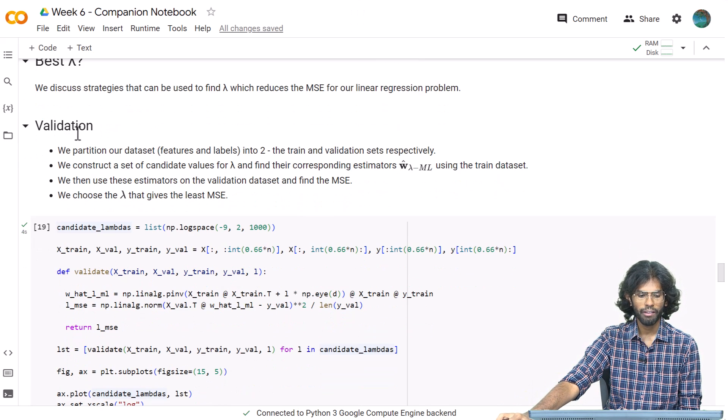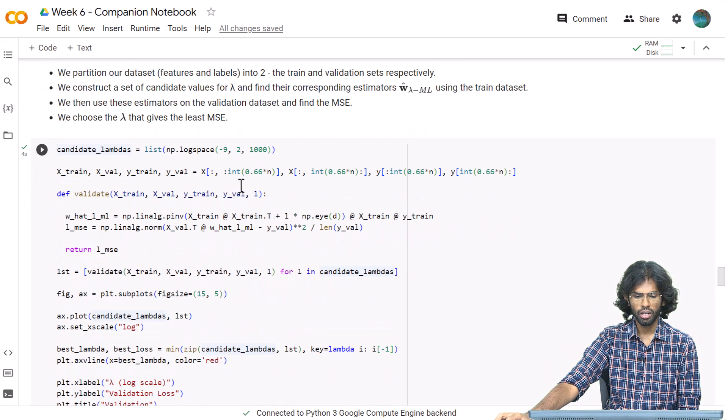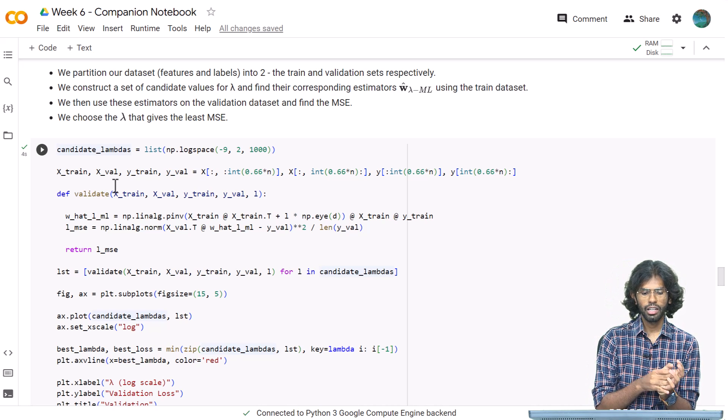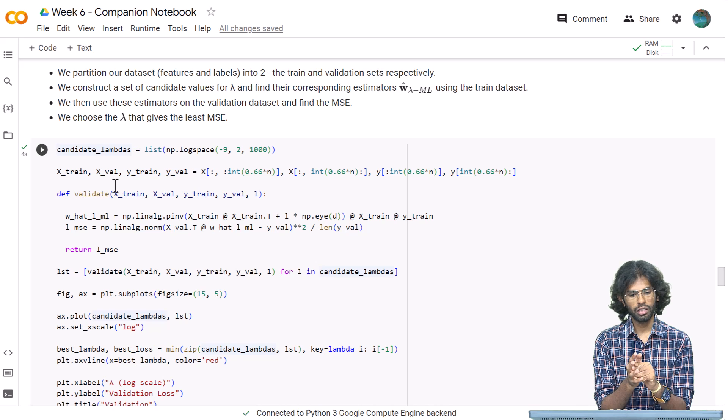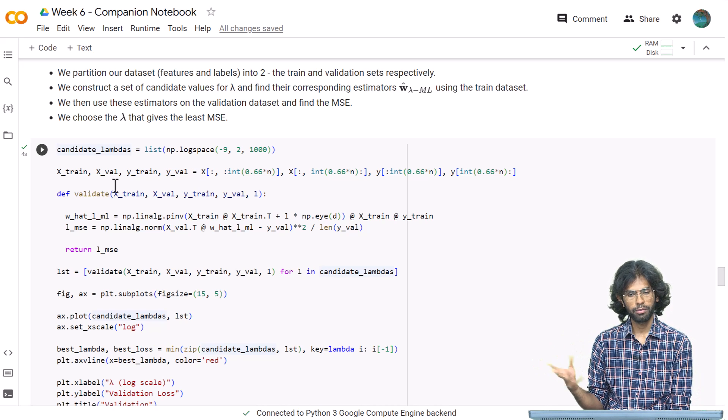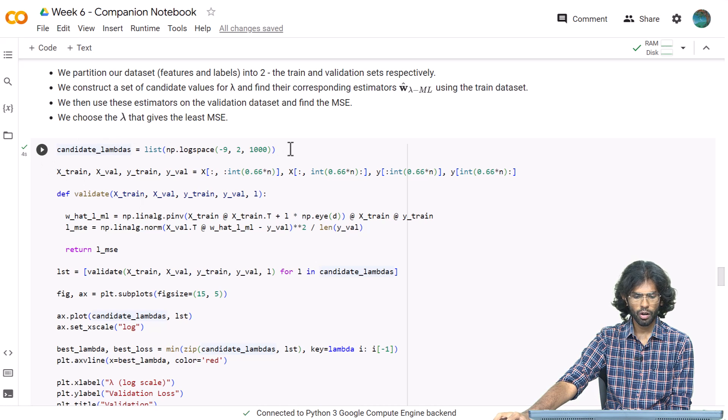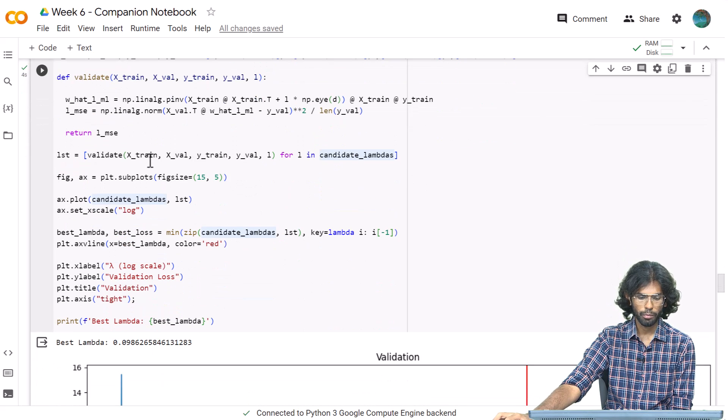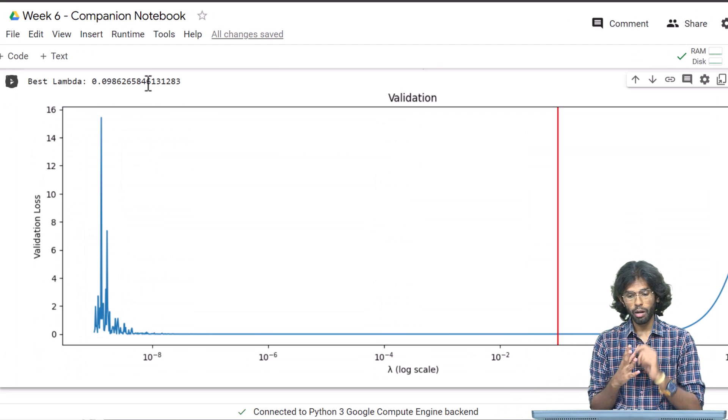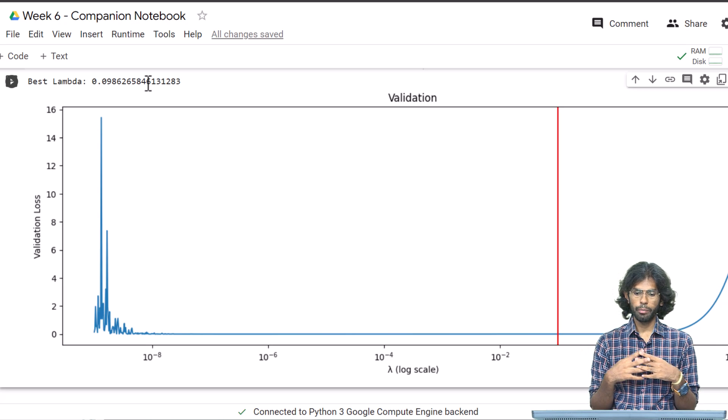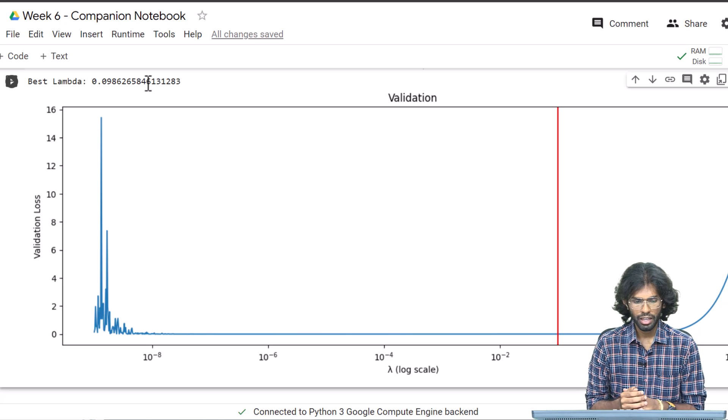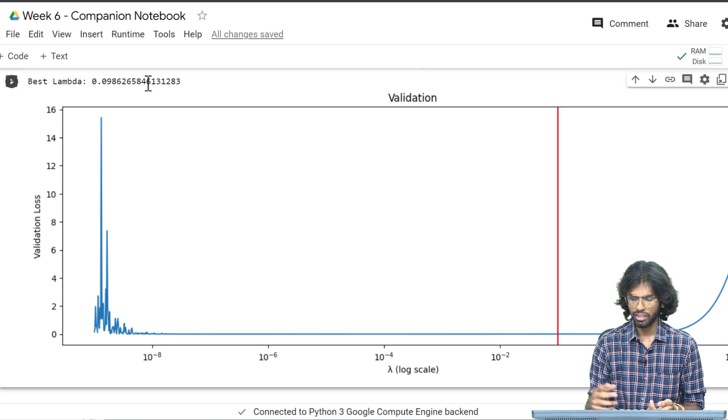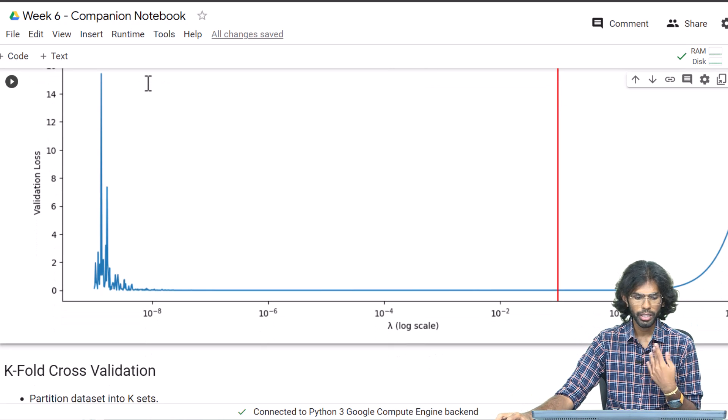How do we find this hyperparameter? There are some strategies. The first one is normal validation. We split our dataset into two: one allotted for the validation set, and the other for the train set. We will use the train set to learn our parameters, and then find how well it performs on our validation set. We do this for all our lambdas, and whichever dataset it performs the best, we will choose that to be our optimal λ. The problem with this is that your validation set need not really represent accurately the problem itself. It could be biased.